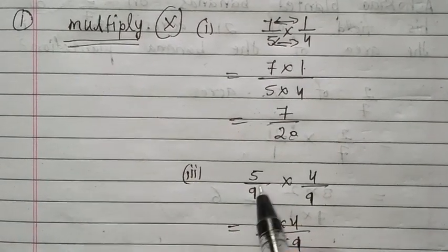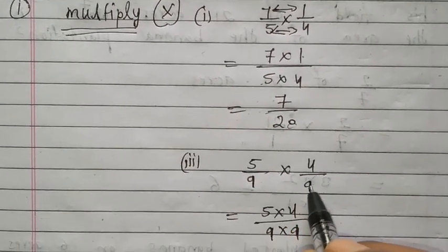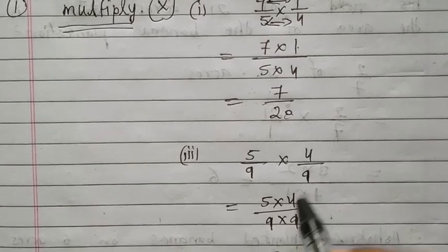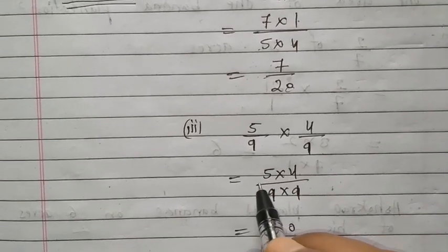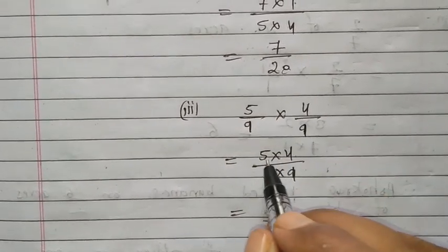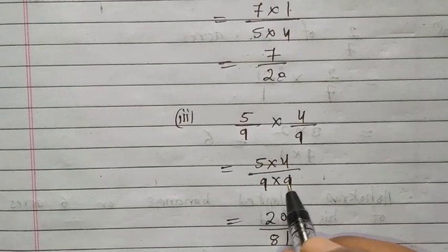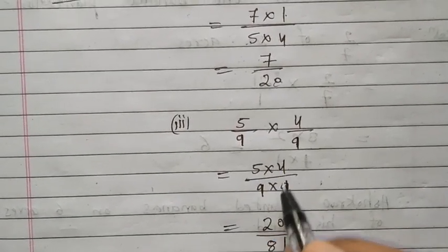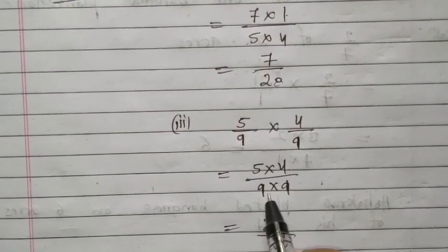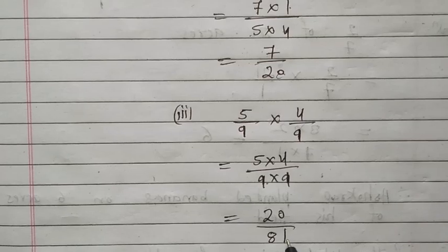See the third question: 5 upon 9 into 4 upon 9. Again, numerator multiplied with the numerator: 5 into 4, and denominator with denominator: 9 into 9. So 5 into 4 is 20, and 9 into 9 is 81. Answer: 20 upon 81.